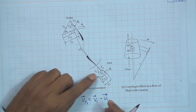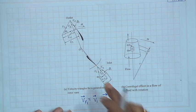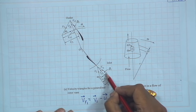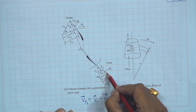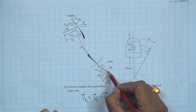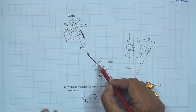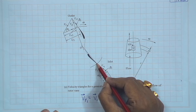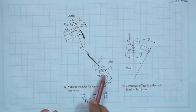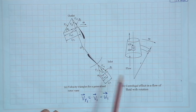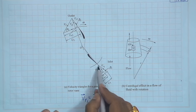This is the absolute velocity of the fluid; u1 is the blade velocity direction. If we draw to scale and complete this triangle, this gives the direction of the relative velocity — the velocity with which the fluid enters the rotor blade at the inlet with respect to the rotor. To show this relative velocity we draw the velocity triangle, which is the velocity vector or vector triangle.